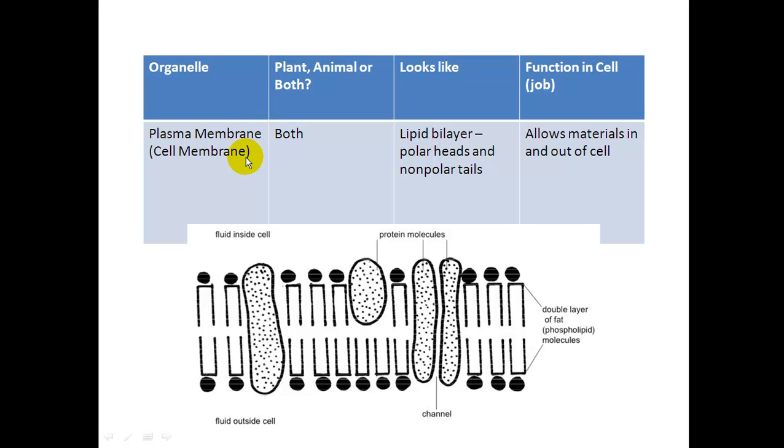So the first one we're doing is the plasma membrane or the cell membrane. It is found in both plants and animals. And we learned about this last chapter. It is made of a lipid bilayer. You have your polar heads here, those are the circles. And that is your phosphate group, your choline group. And then you have your nonpolar tails. These are your fatty acids. There's two of them per polar head, as you can see in the picture. And those are nonpolar, so those are hydrophobic. The polar part is hydrophilic, and that is called the phospholipid bilayer.